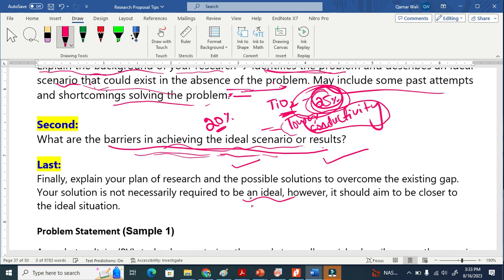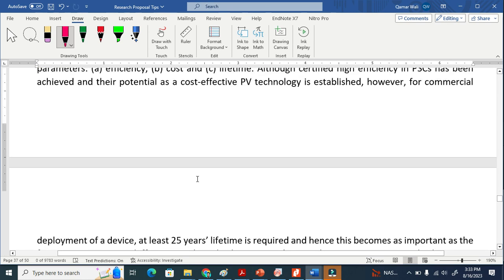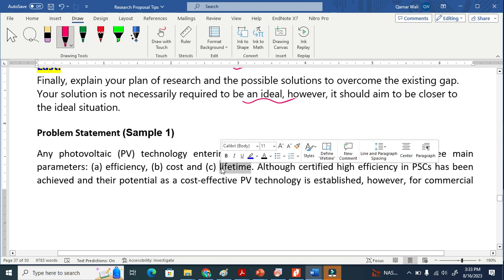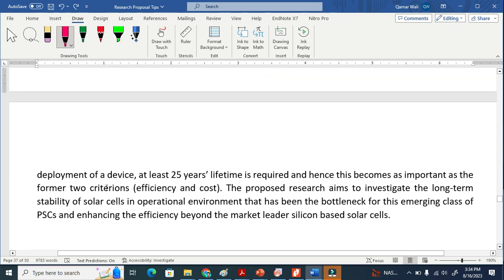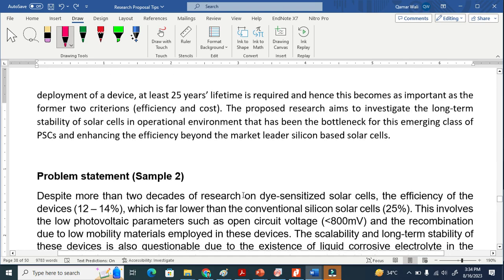This is the sample of problem statement. I will put this in the description. I explained small background in photovoltaic technology. Entering the market usually based heavily upon three main parameters: efficiency, cost, lifetime. I explained the background. Although certified high efficiency has been achieved and their potential as cost-effective energy established, however, for commercialization, employment of this technology, you see here, I am bringing this to the issue side. I will put this sample, two samples in the description.